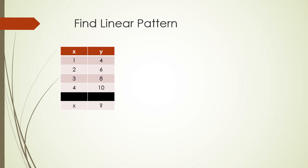Here's a table with some x-values and y-values, and we want to figure out if it's a linear pattern. The meaning of a linear pattern is that you look at the y-values and observe whether they are increasing by the same number or decreasing by the same number. If they're not changing by the same number, you're probably looking at a quadratic or exponential expression instead.